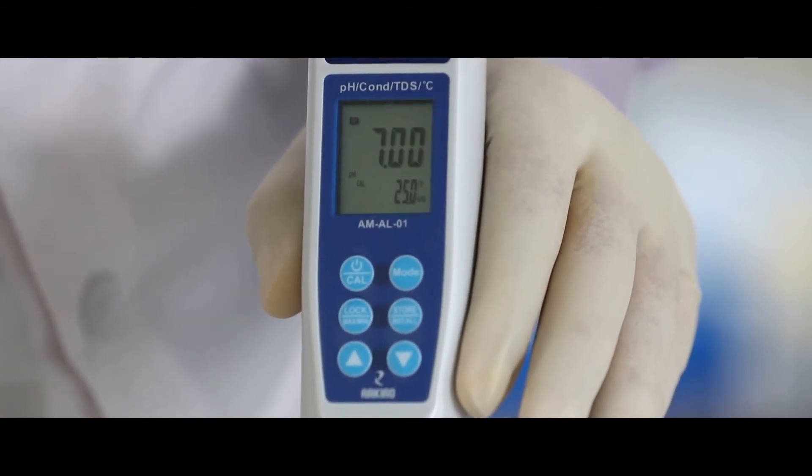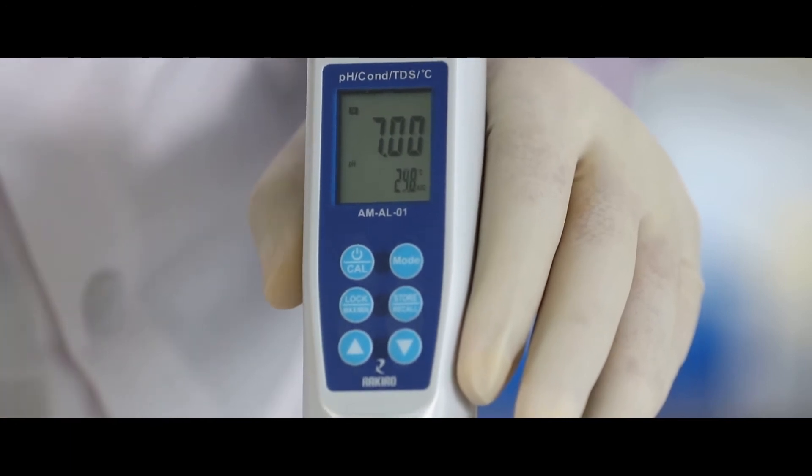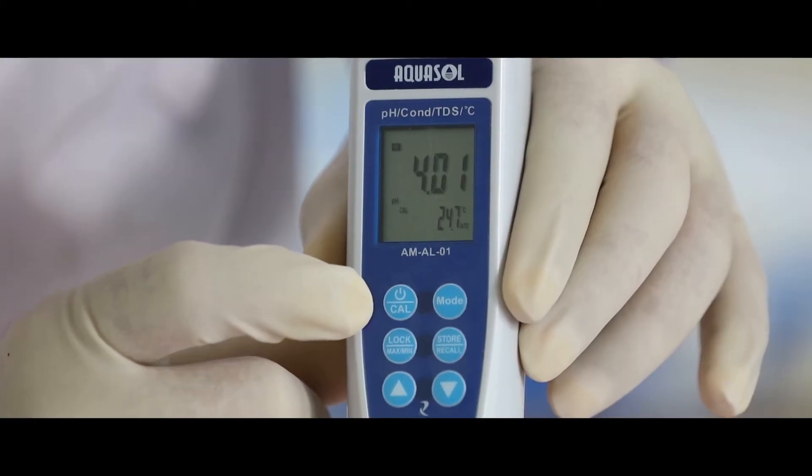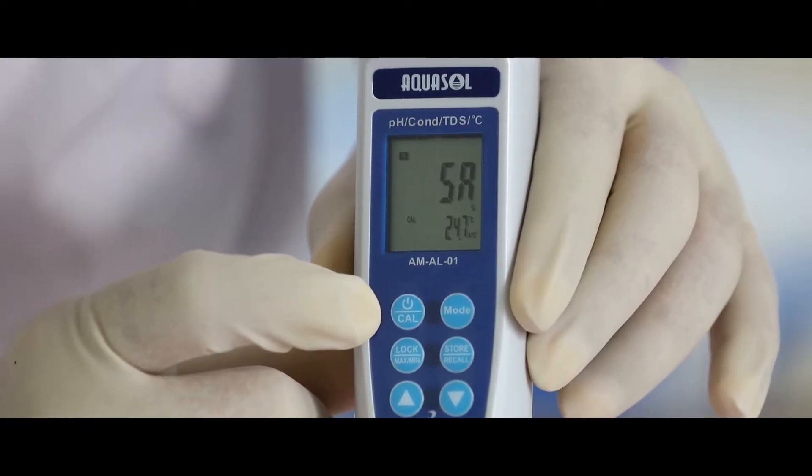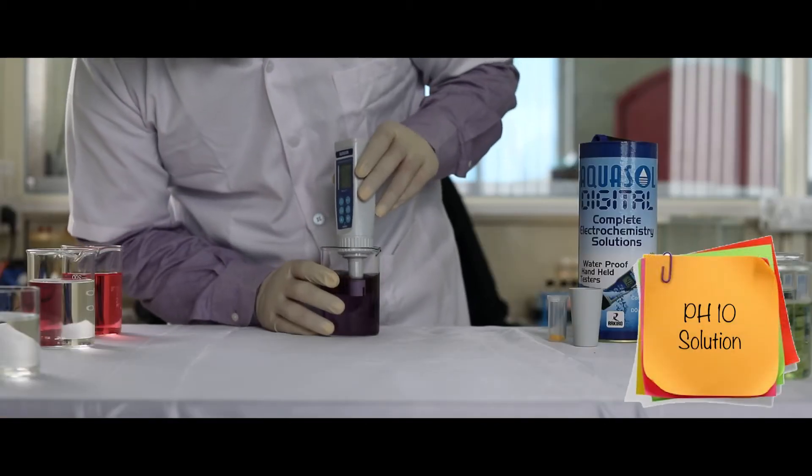Once calibrated, the device will display SA and END. Repeat the procedure for pH 4 standard solution and pH 10 standard solution. Rinse the electrode after each calibration.